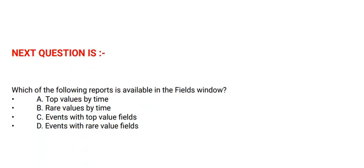Next question: which of the following reports is available in the fields window? Option A: Top values by time. Option B: Rare values by time. Option D: Events with top value fields. Option D: Events with rare value fields. The correct option is option A.